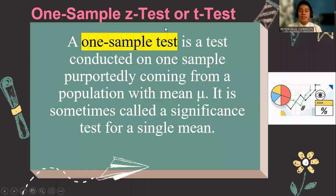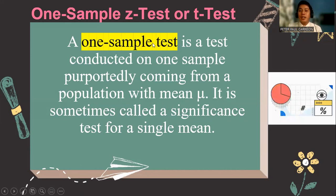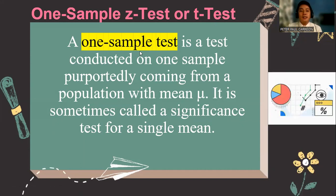What is a one sample Z test or T test? A one sample test is a test that is conducted in one sample purportedly coming from a population with mean mu. It is sometimes called the significance test for a single mean. If you want to test if there is a significant difference with the chicken joy in different stores, then you will be talking about the level of crispiness of that chicken. You are going to take those samples out of the population. Therefore, you are performing a one sample test.